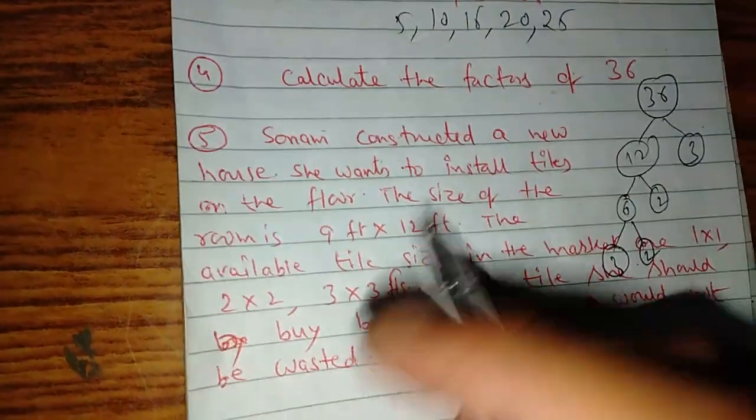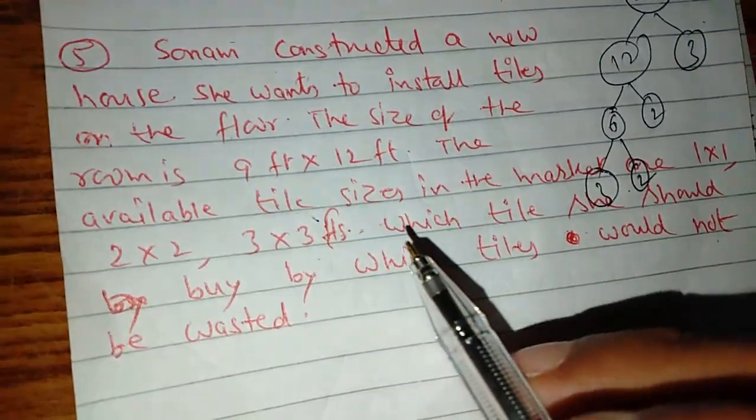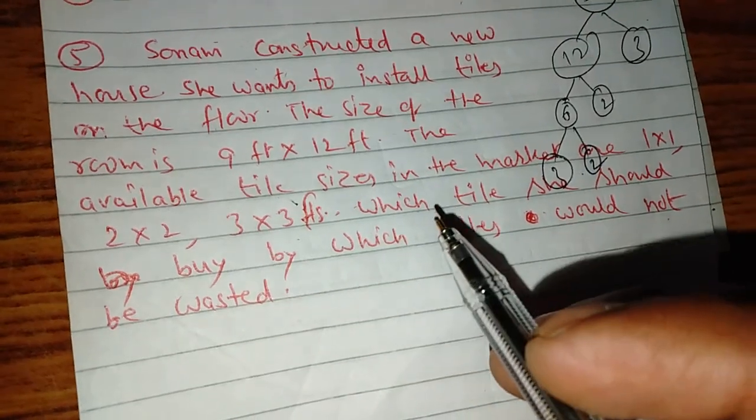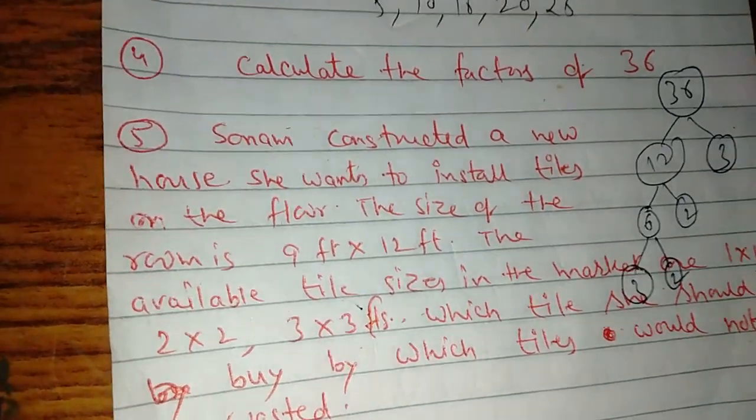Sonam constructed a new house. She wants to install tiles on the floor. The size of the room is 9 feet by 12 feet. The available tile sizes in the market are 1 by 1, 2 by 2, 3 by 3 feet. Which tiles should she buy, by which tiles wouldn't be wasted? What should we do in this?